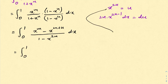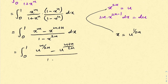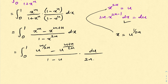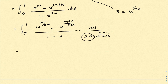We can isolate x: x equals u to the 1 over 2n. So we have u to the m over 2n minus u to the m plus n over 2n, all over 1 minus u. And dx equals du over 2n times x, which is u to the 1 over 2n, giving u to the 2n minus 1 over 2n. Since 1 over 2n is a constant we write it outside the integral.